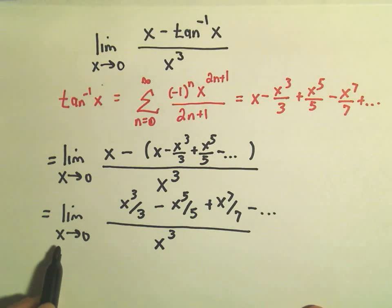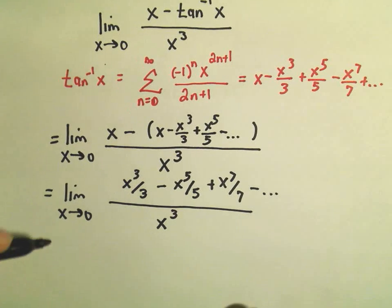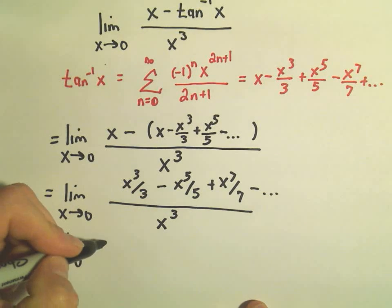And again, to do the limit, we want to just plug in x equals 0. But again, we're dividing by 0 because of the x to the 3rd in the denominator. Well, hey, conveniently, the way that these will be set up typically, notice you can actually factor out an x to the 3rd in the numerator.